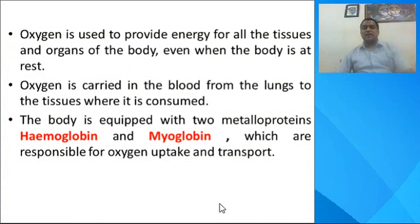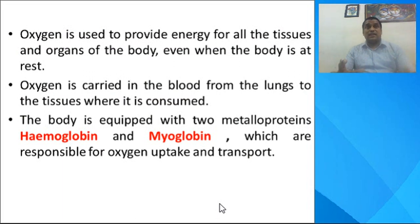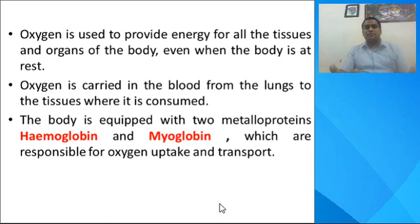Oxygen is used to provide energy for all the tissues and organs of the body, even when the body is at rest. This oxygen is carried in blood from lungs to the tissues where it is consumed. Nature has designed a sophisticated mechanism for the storage and transport of oxygen. Two metalloproteins — hemoglobin and myoglobin — are responsible for oxygen uptake and transport in our biological system.